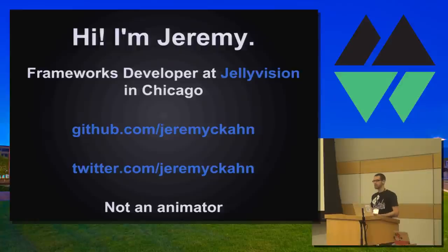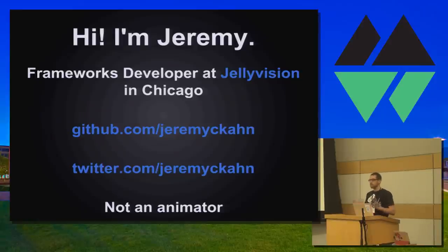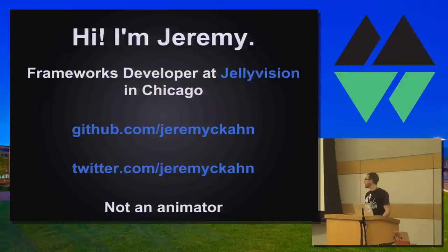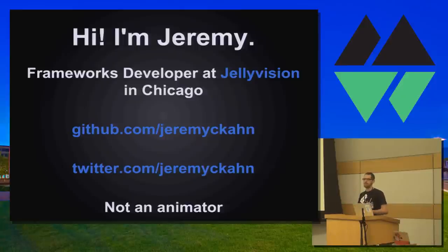My name is Jeremy Kahn. I'm a frameworks developer at a company called Jellyvision in Chicago. Jellyvision is an interactive company that communicates via interactive conversations — we do some really cool stuff, so check us out. When I'm not doing stuff in my day job, I spend a lot of time making open source stuff on GitHub and sharing my thoughts on Twitter, both as Jeremy C. Kahn. I want to highlight that I am not an animator — I am an engineer.